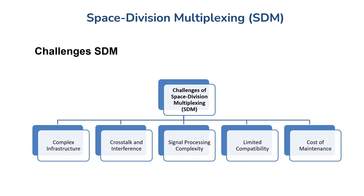Even though SDM offers many benefits, it has some challenges. The first is complex infrastructure — implementing SDM requires specialized equipment such as multi-core fibers or multiple antennas, which can be costly and complex to deploy. Additionally, cross-talk and interference can occur with multiple parallel data streams, where cross-talk between channels reduces signal quality and can lead to potential data loss or degradation.